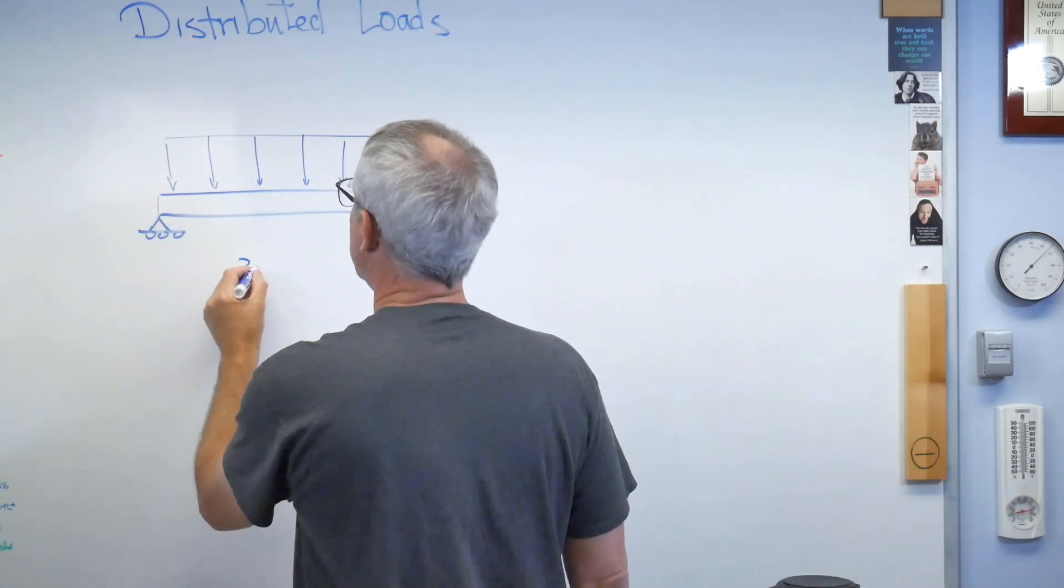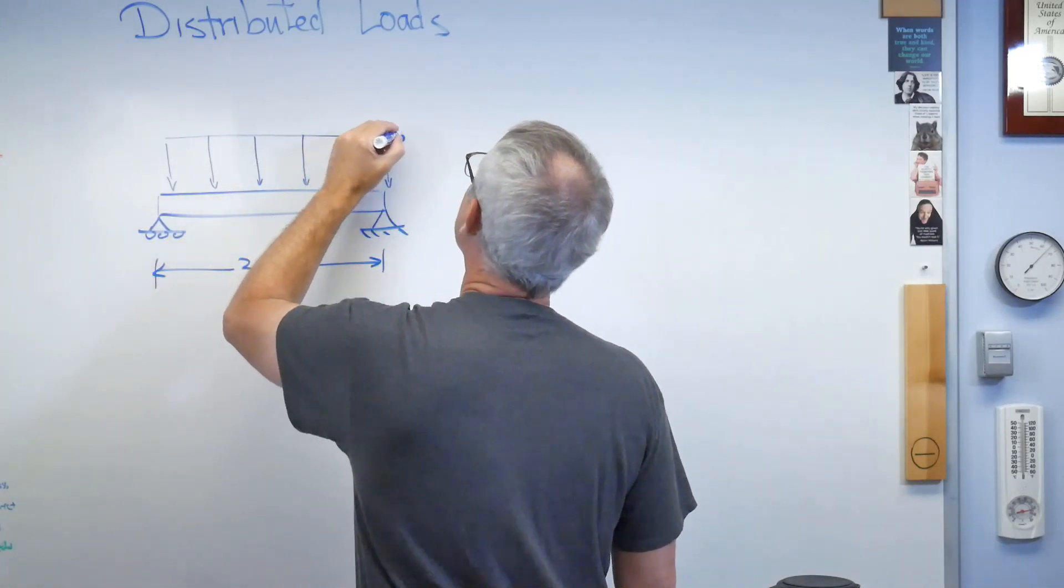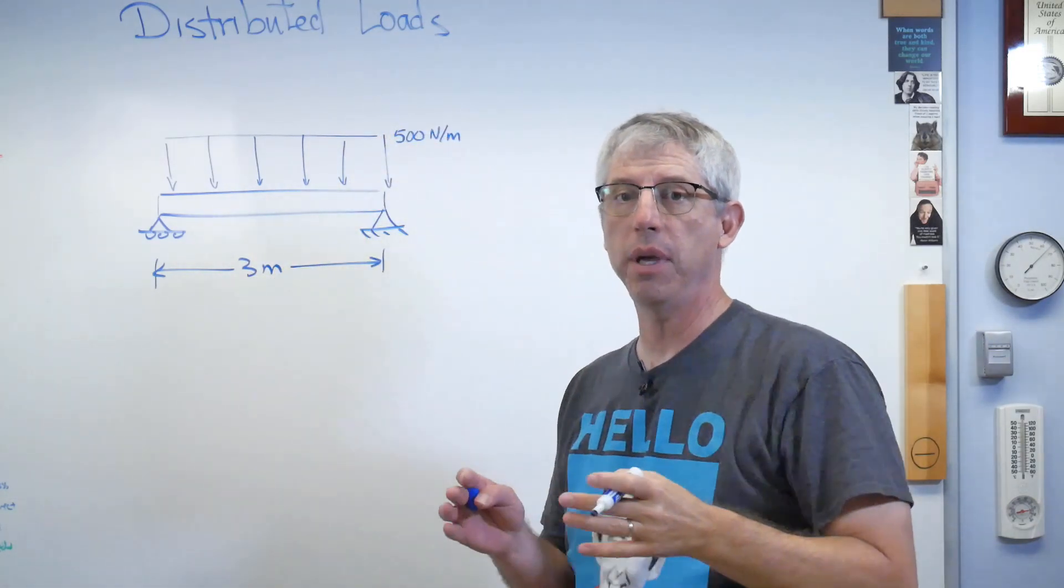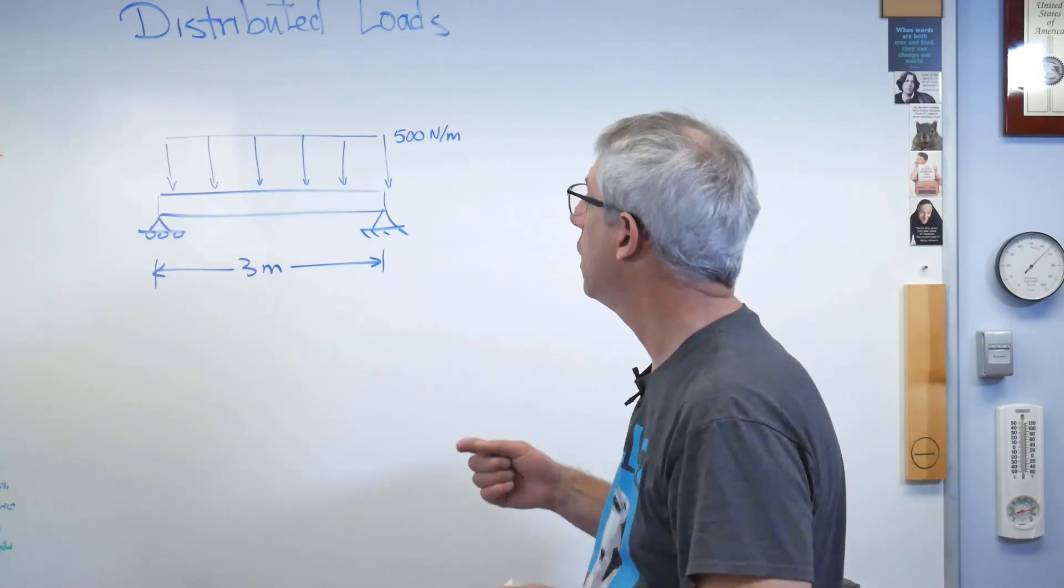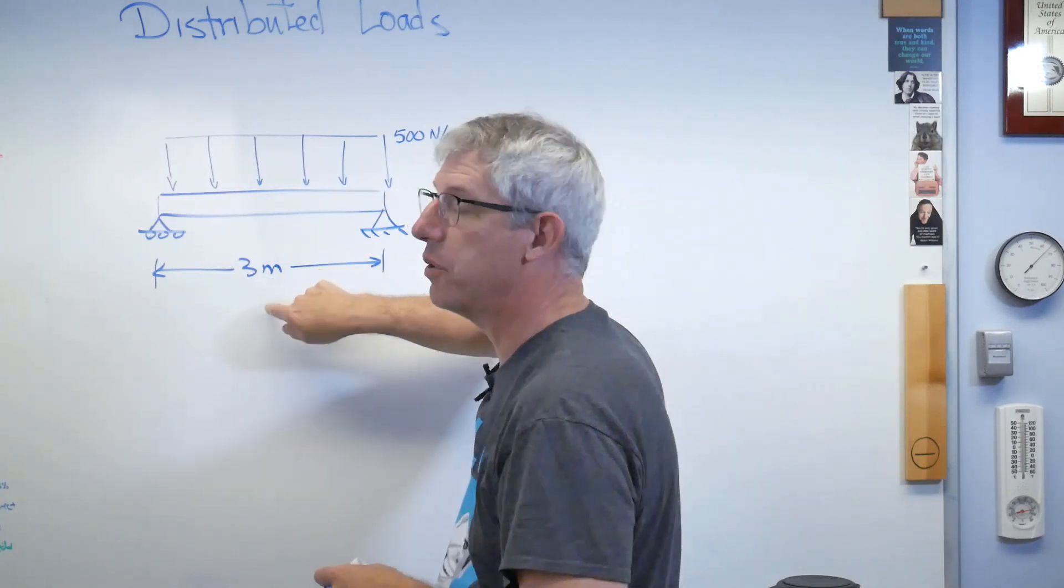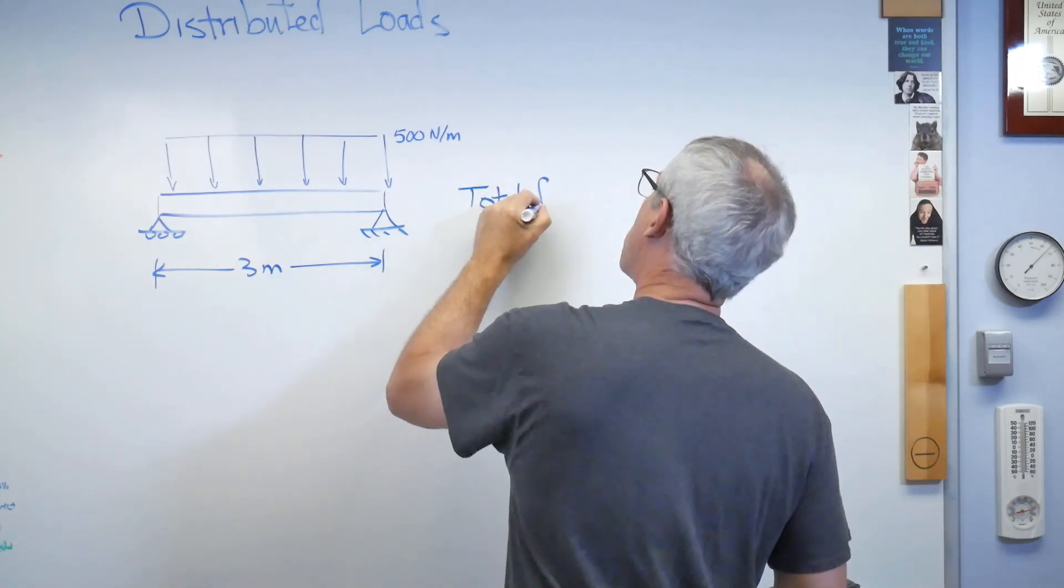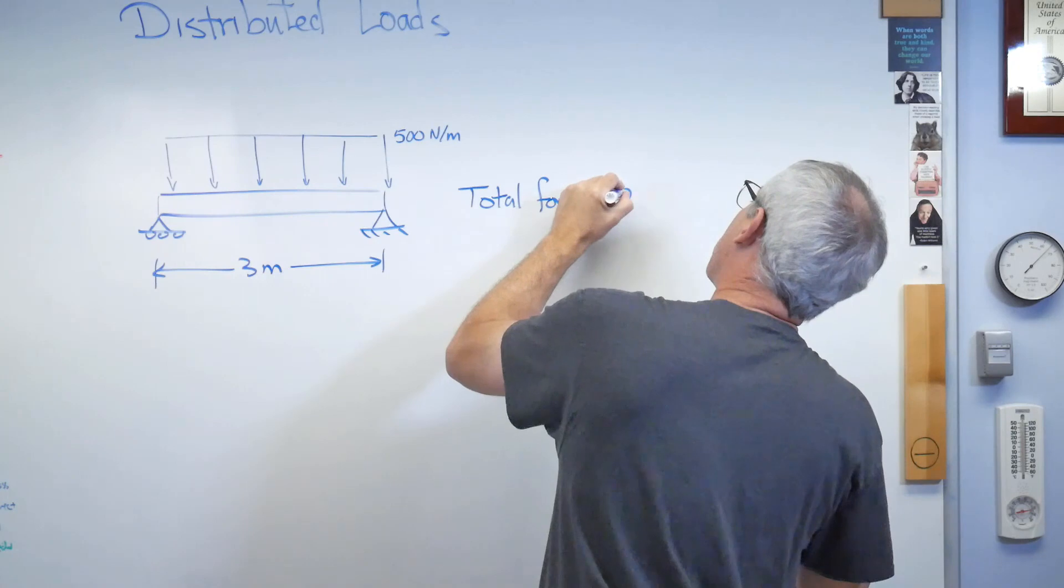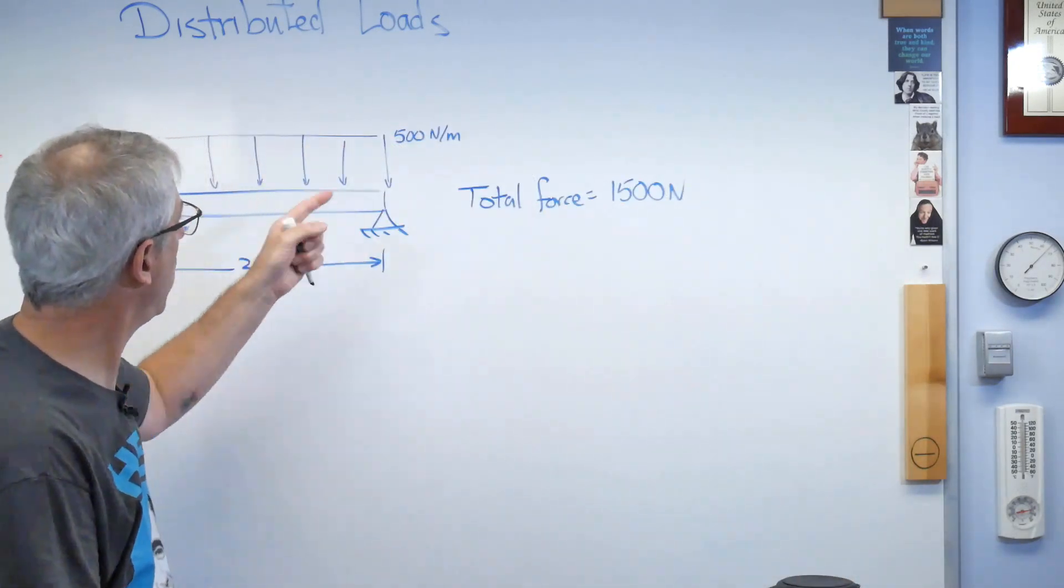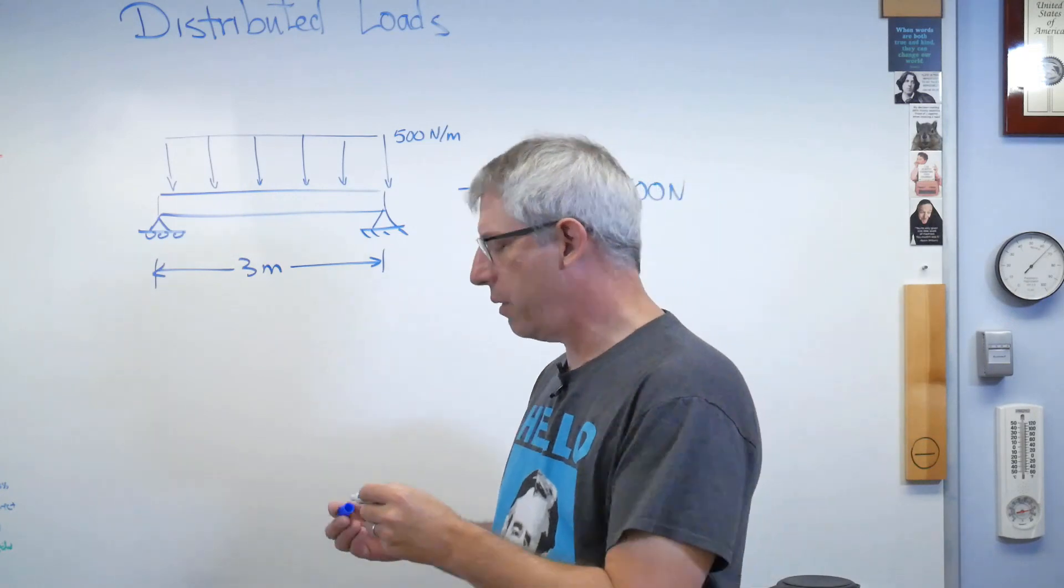So let's give this some numbers. Let's say this is 3 meters, and let's say this is 500 newtons per meter. That means every meter of this beam bears 500 newtons of load. The total load is 500 newtons per meter times 3 meters, 1500 newtons. This is how we take care of this idea that loads can be distributed across a structure.